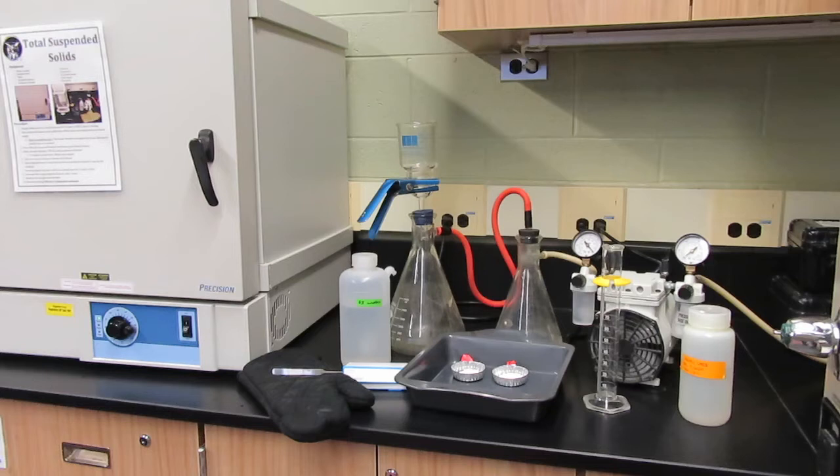We have a glass filter base and funnel to place on top of our vacuum setup, a vacuum pump that is attached to the beakers, a drying oven set to 105 degrees celsius, and tweezers and oven mitts.